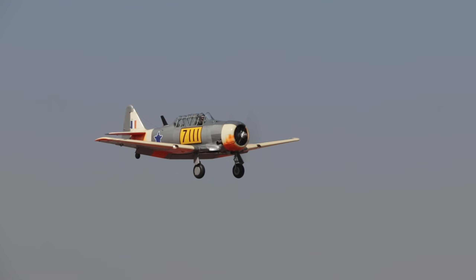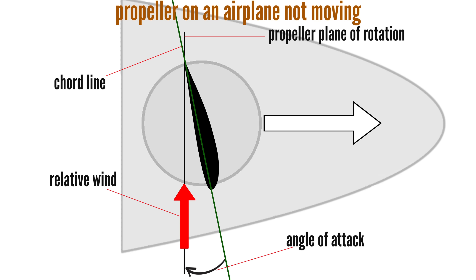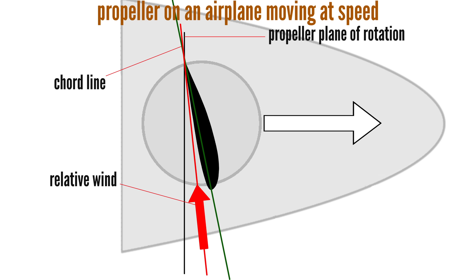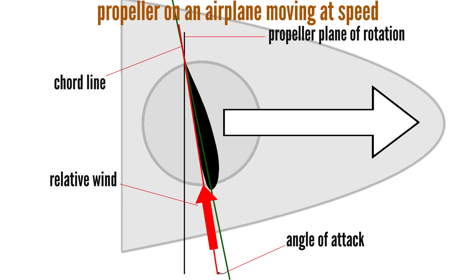Up to now, we've only considered a spinning propeller that is stationary. When a propeller moves through the air on a flying airplane, the angle the blade stalls at gets higher the faster the airplane is moving. When stationary, the spinning propeller blade hits the air roughly perpendicular. But as the airplane speeds up, the angle the propeller hits the air at changes. As the moving blade hits the air mass at increased forward speed, the relative angle the blade hits the air at decreases, effectively lowering the blade's angle of attack. The faster an airplane moves through the air, the lower the propeller blade's angle of attack.